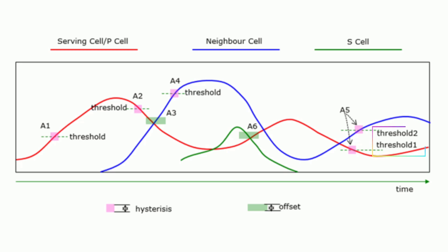Event B2 occurs when the serving cell's signal deteriorates below threshold 1 and an inter-RAT neighbor's signal surpasses threshold 2, suggesting a potential handover due to better conditions in the inter-RAT neighbor cell.